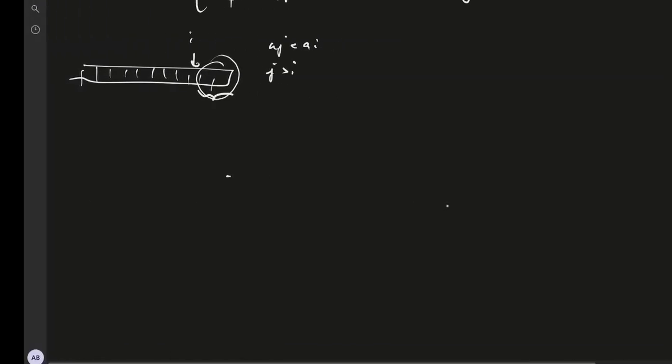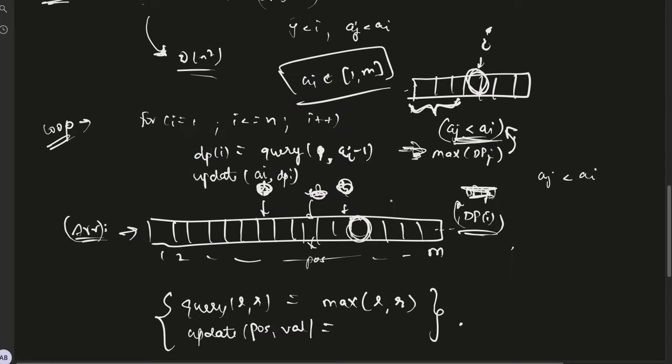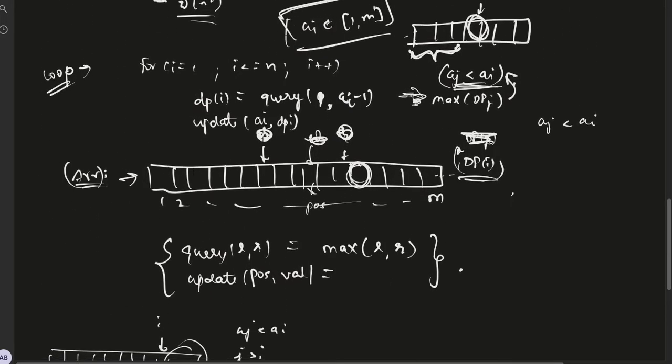First of all, here we assume that a[i] is in the range 1 to m. What if m is very large, let's say m is of the order of 10 power 15? We can't make an array of size m. Then we use size compression.